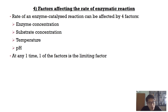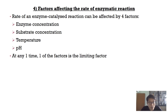For example, maybe there's enough substrate and enough enzymes, and the pH is also at the optimal level, but the temperature is very low. So the reaction is very slow, and the temperature is the limiting factor in this case. At any one time, one factor is the limiting factor that limits the rate of reaction.